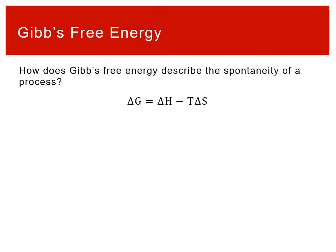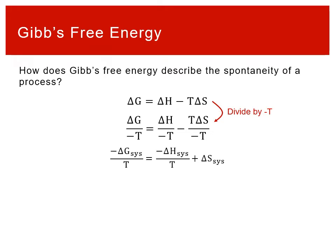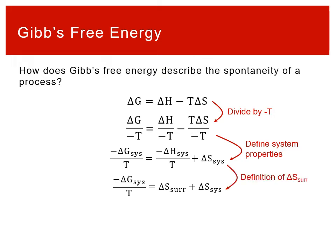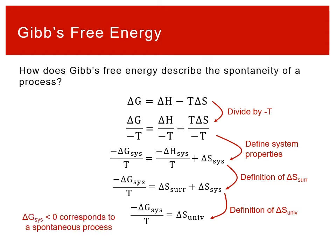To show how ΔG describes spontaneity, we start with ΔG = ΔH − TΔS and divide both sides by negative temperature. We then define everything as the system, and substitute the definition of ΔS(surroundings) = −ΔH(system)/T. Finally, using ΔS(universe) = ΔS(system) + ΔS(surroundings), we find that a positive ΔS(universe) — which means spontaneous — corresponds to a negative ΔG of the system.